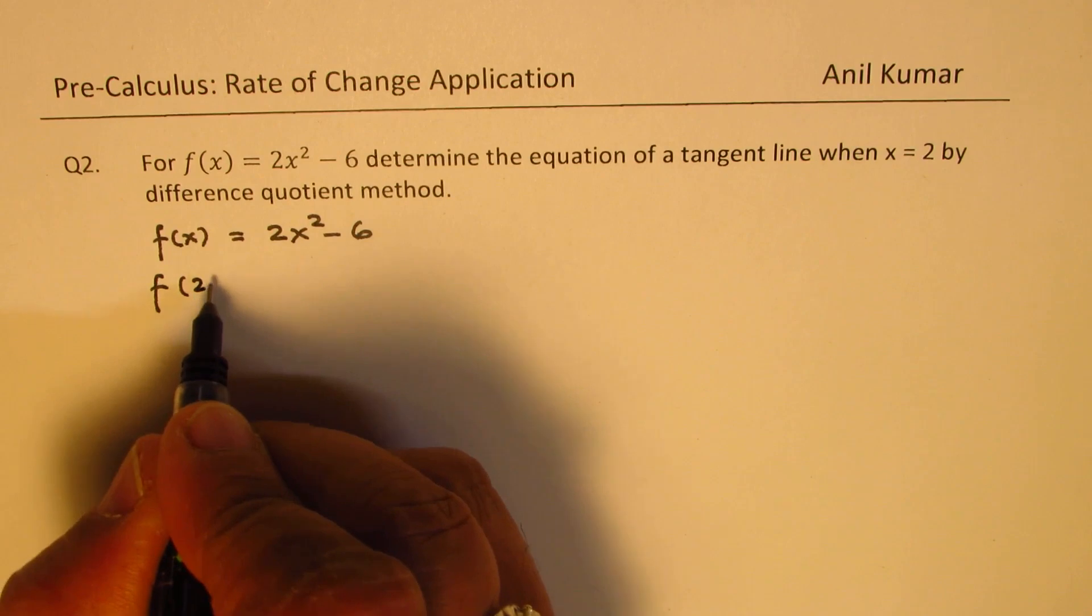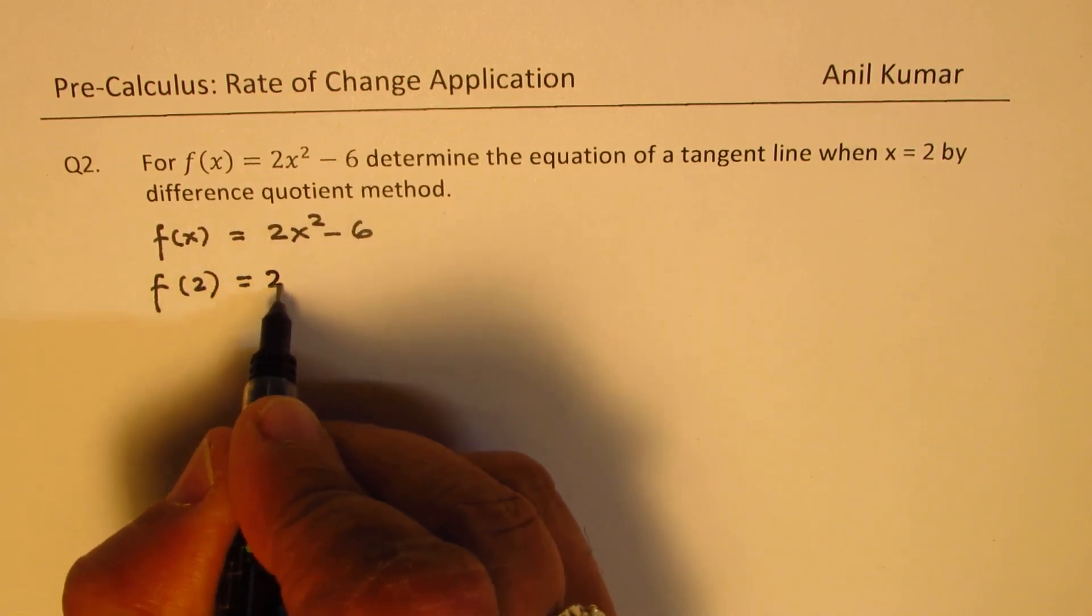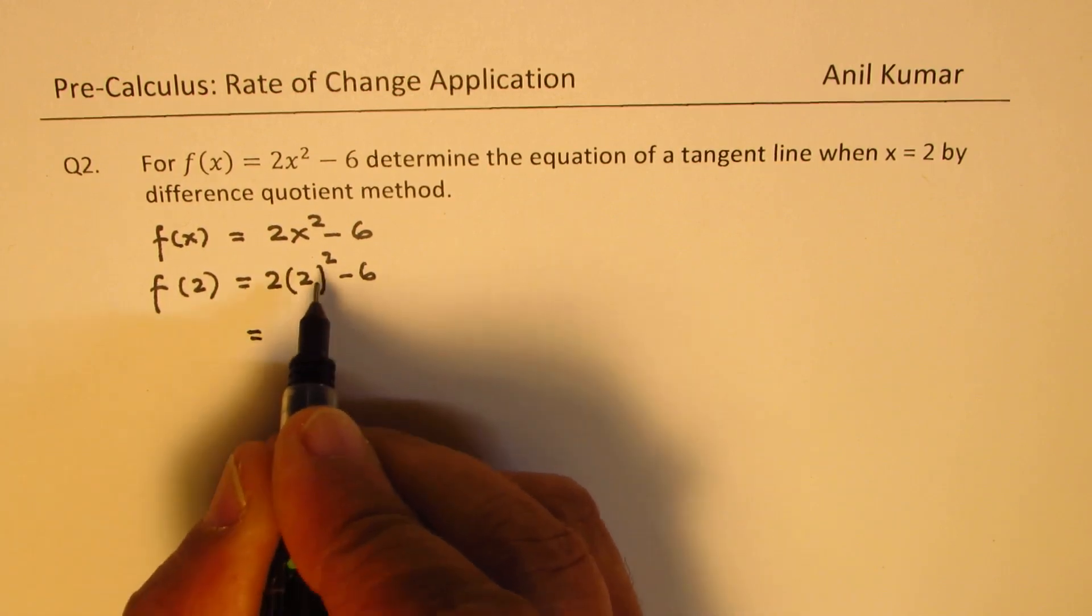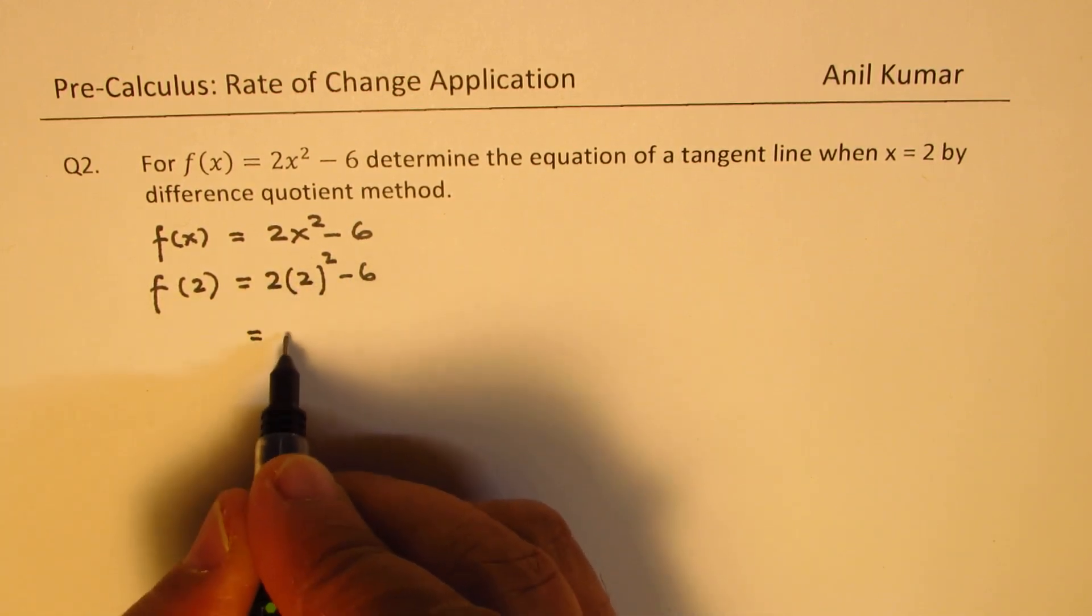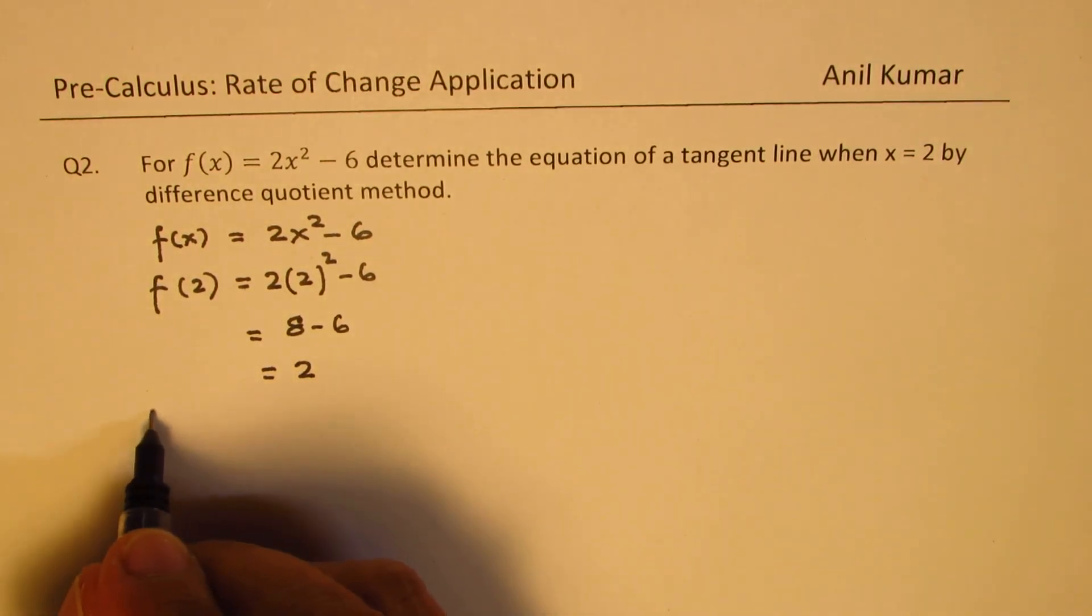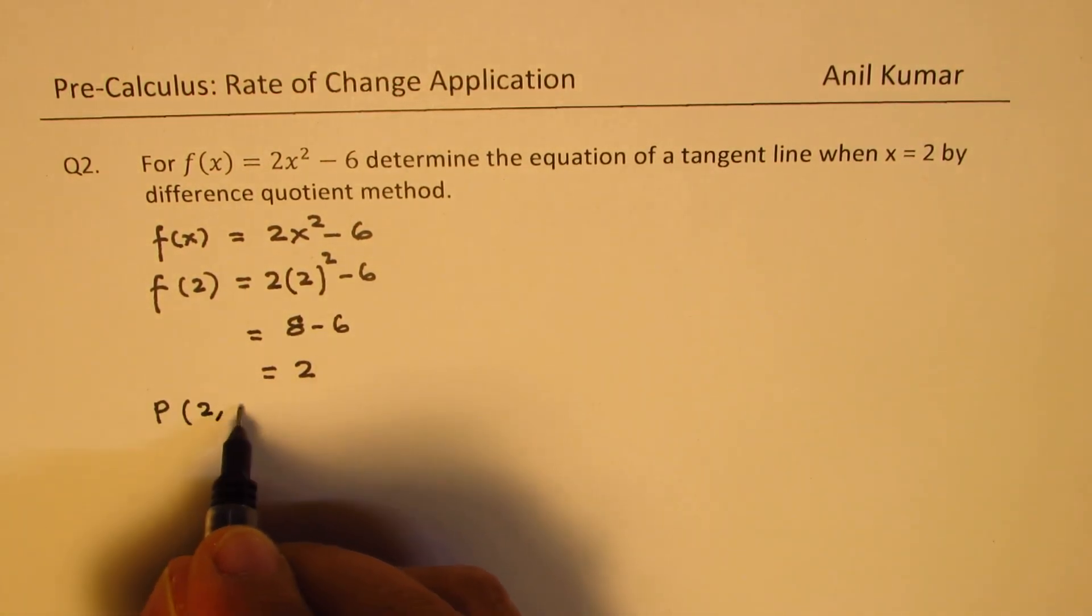Let's find the point at x = 2. Substituting 2 here, we get 2 squared minus 6, which is 2 times 2, 4 times 2 is 8 minus 6, which is also equal to 2. So the point here is 2, 2.